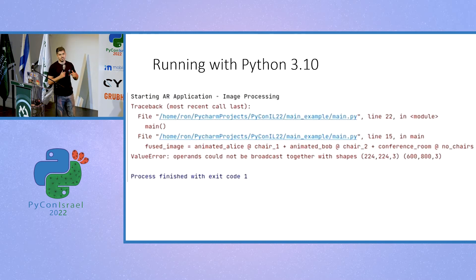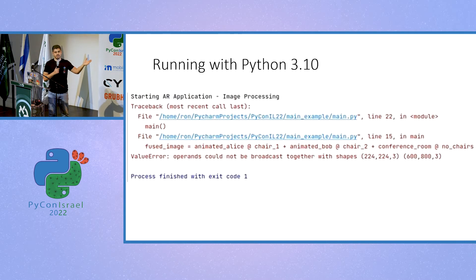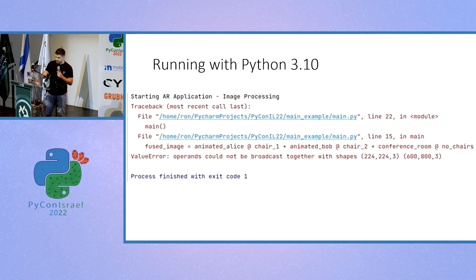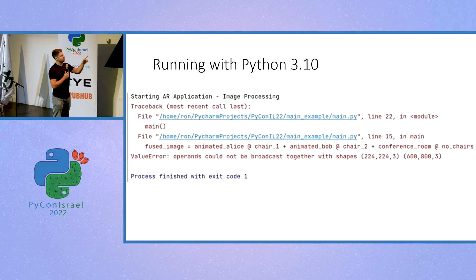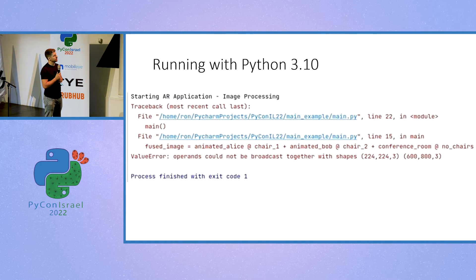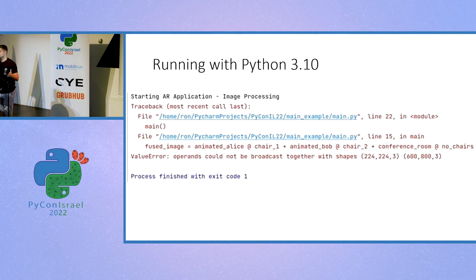So let's look at this error. We see that this error traces first to line 15. On line 15, we can't broadcast tensors with shape 224 and another one with shape that starts with 600. Now that's not enough, at least for me, to debug this application.